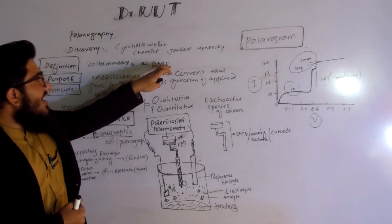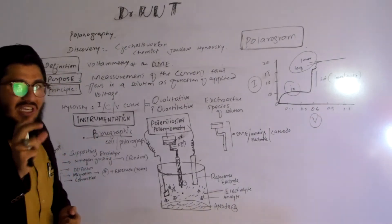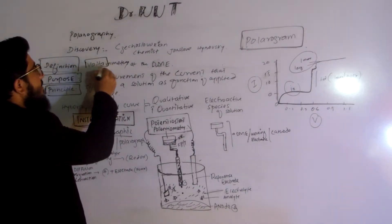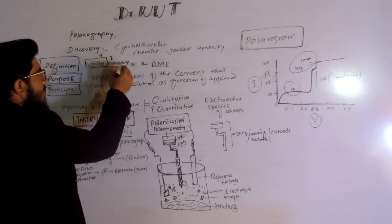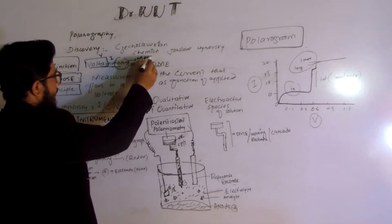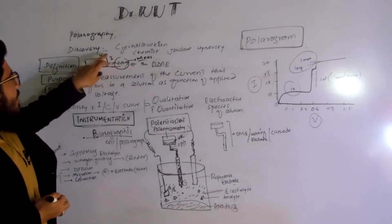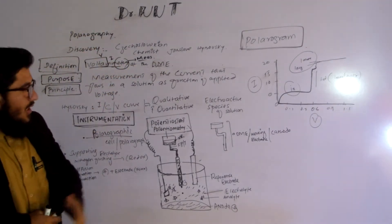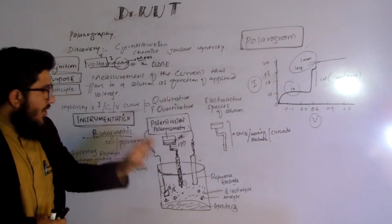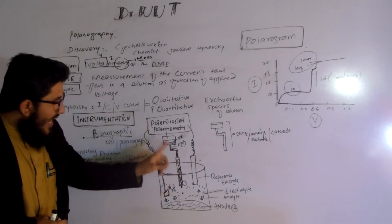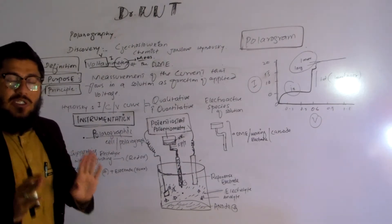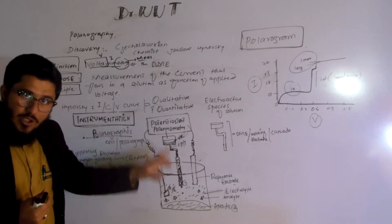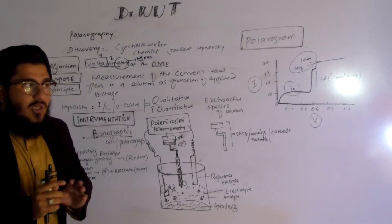You might be thinking it is very difficult — no, it's very easy. Just concentrate: 'volta' means voltage, and 'ammetry' means current measurement. So the measurement of current and voltage at the dropping mercury electrode is known as polarography. This is the dropping mercury electrode — if you measure the current or voltage at this dropping mercury electrode, that is known as polarography.